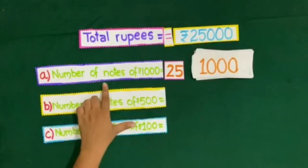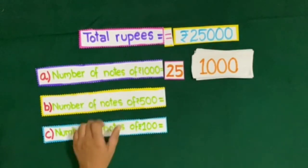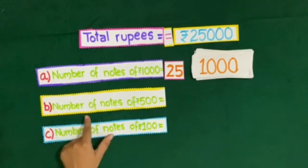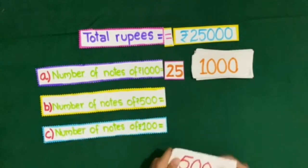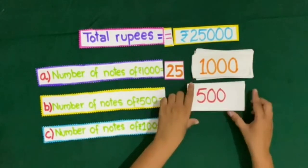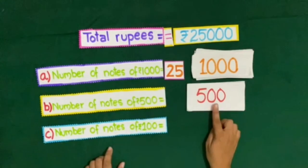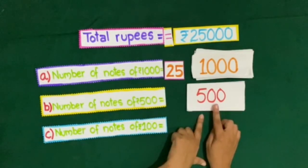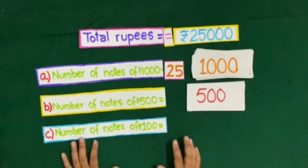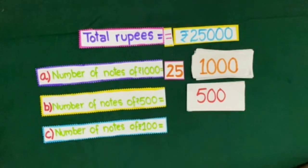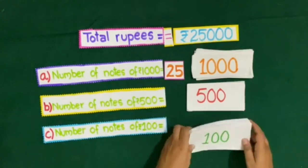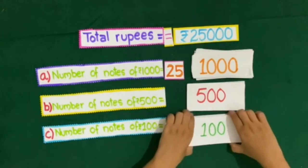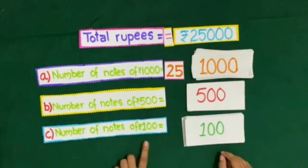Now part A has been solved for you. Next, part B is number of notes of rupees 500 — you will count 500 rupee notes, make them on paper at home and count in a similar manner. Part C is number of notes of rupees 100 — count it in the same way and make notes of rupees 100 to solve at your home.